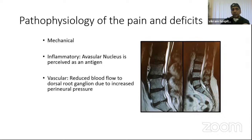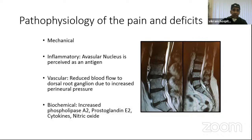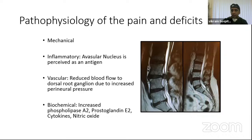Another cause is vascular — that is, reduced blood flow to the dorsal root ganglion due to increased perineural pressure. There is also a biochemical factor: increased phospholipase A2, prostaglandin E2, cytokines, and nitric oxide. These chemicals act as a noxious stimulus on the nerve, causing pain. If we can block these chemicals at the level of the nerve root, the patient can get good pain relief.